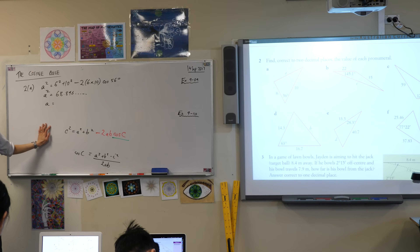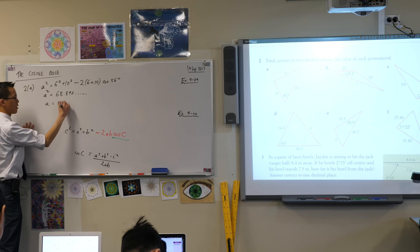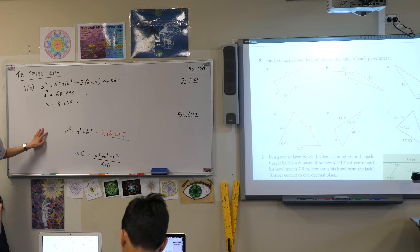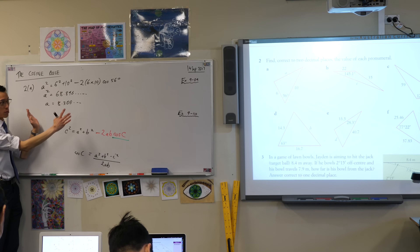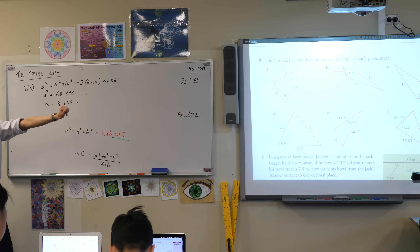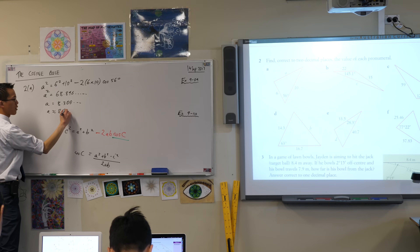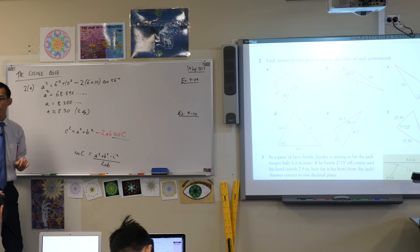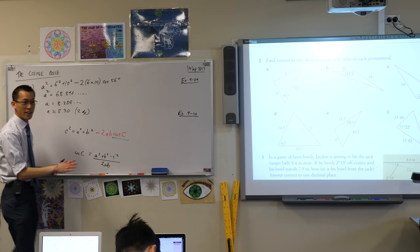Don't approximate yet — you should always approximate last. Give me 3 decimal places for this. They're not all zeros, are they? So eventually it's a 4. So there it is to some number of decimal places. What does the question require? 2. So A is 8.30 to 2 decimal places. Done. The cosine rule is lovely. It works quite nicely.